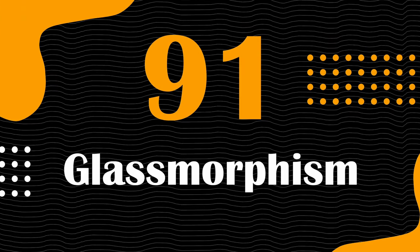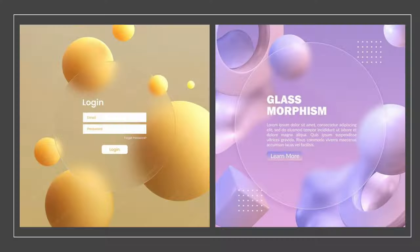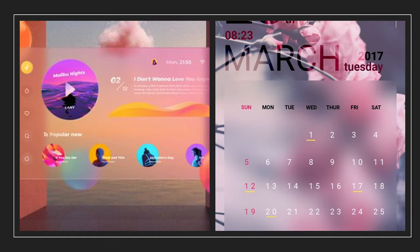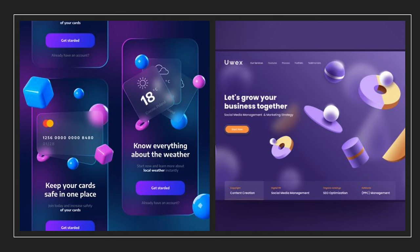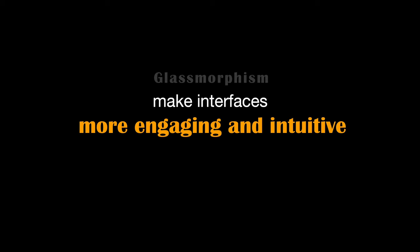Glassmorphism is a design trend characterized by sleek, transparent, and glass-like user interface elements. It's needed for its modern and visually appealing aesthetic, offering a sense of depth and sophistication to user interfaces. Designers can use glassmorphism to create captivating UI elements such as frosted glass overlays, blurred backgrounds, and semi-transparent cards, enhancing the overall user experience and making interfaces more engaging and intuitive.